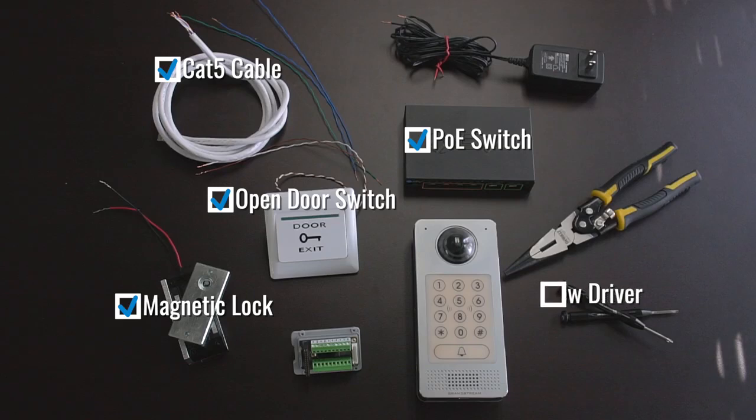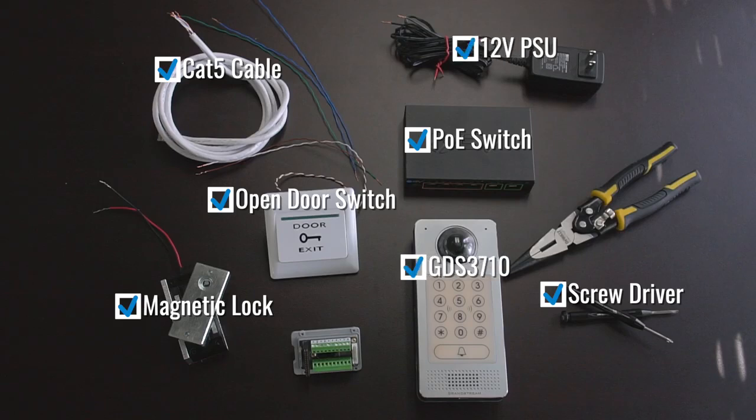We're going to need a Phillips and a slot head screwdriver. Last but not least, definitely a GDS and a power supply to power the MagnaLock.